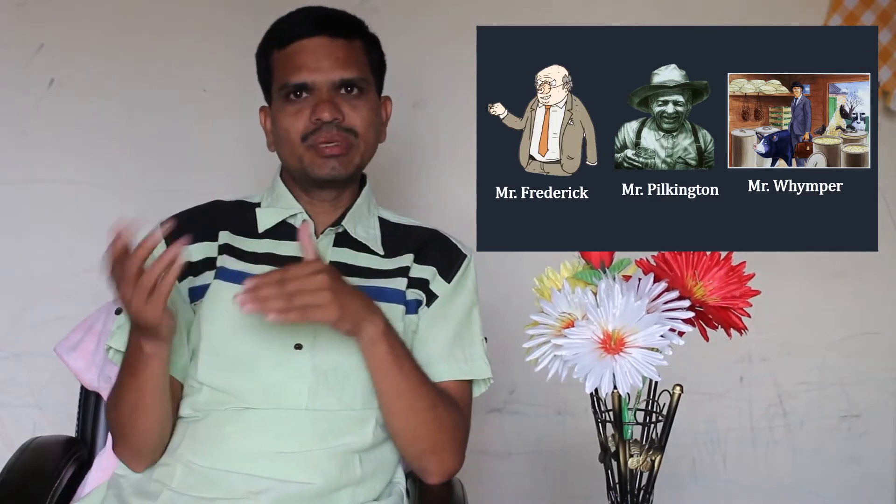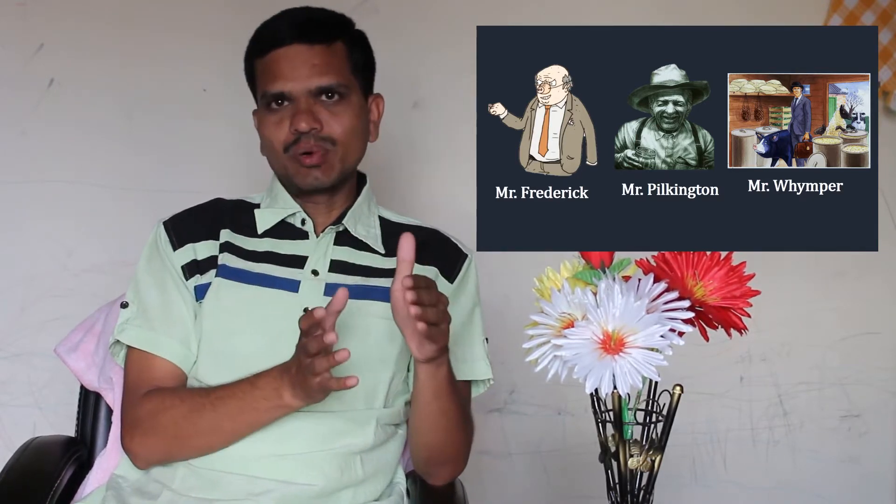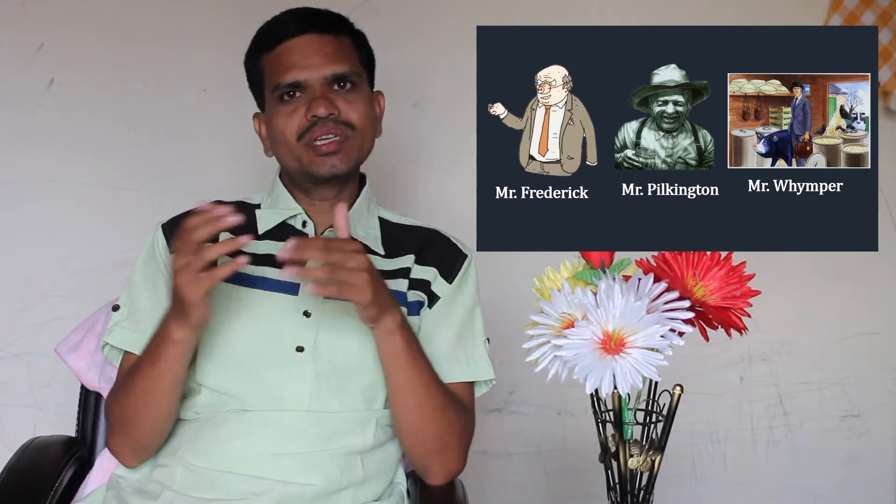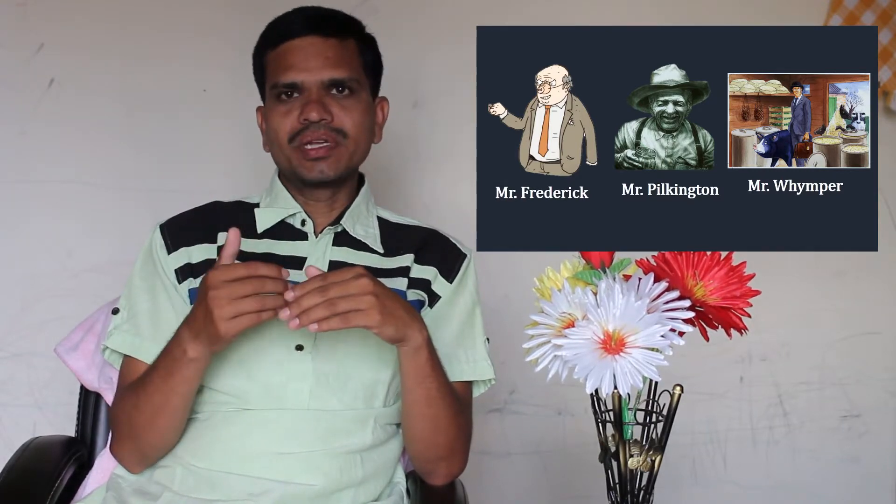The next three characters — Mr. Frederick, Mr. Pilkington, and Mr. Whymper — are human beings in the novel. Mr. Frederick is the owner of a neighboring farm; he initially trades with Animal Farm but becomes an enemy of Napoleon, cheats the pigs, and attacks the farm, only to be defeated. Mr. Pilkington is the owner of another neighboring farm and becomes an ally to Napoleon and the pigs. Mr. Whymper is a lawyer retained by Napoleon who acts as mediator between the human beings and the animals.